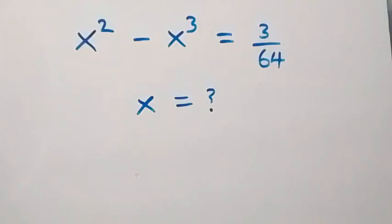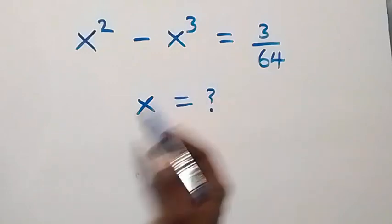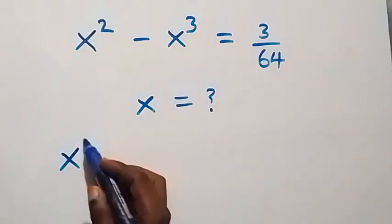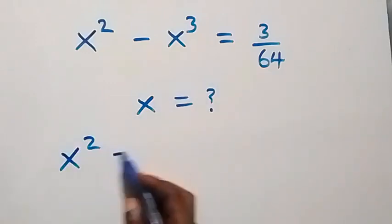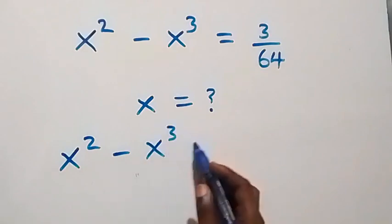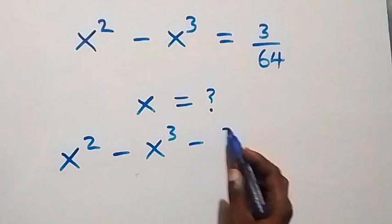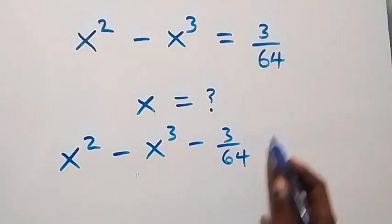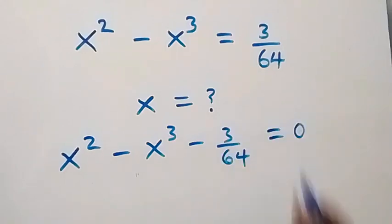Welcome. We are going to solve for x in this algebra equation. We have x squared minus x cubed, then minus 3 over 64, now equals zero.